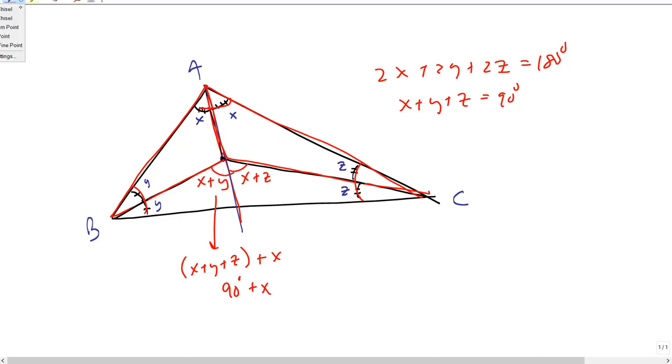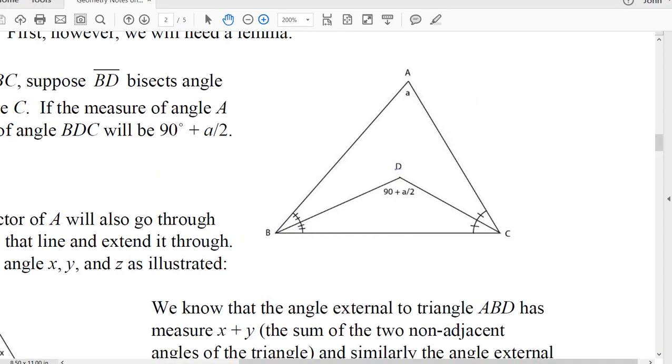So now we know that if we bisect A, the point on it that is equal to 90 degrees plus half of the measure A will also bisect B and C. That's the lemma that we're going to use repeatedly on this.